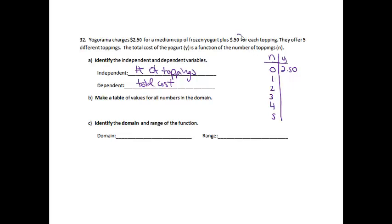If I do one, since each one is $0.50, it will be $3.00. Add $0.50 more to get $3.50. Add $0.50 more to get $4.00. Add $0.50 more to get $4.50. And $0.50 more to get $5.00. So that was my table.